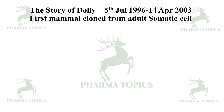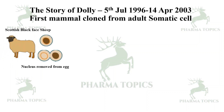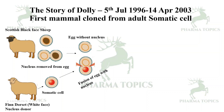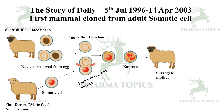The story of Dolly: she was cloned on 5th July 1996, a lamb that lived up to seven years. She was the first mammal cloned from an adult somatic cell — a Scottish Blackface sheep. The nucleus was removed from the egg of the black sheep to obtain an enucleated egg. The nucleus from a Finn Dorset white-faced somatic cell was then fused with this enucleated egg, producing an embryo placed in a surrogate mother, which led to the birth of Dolly — a white-faced lamb.